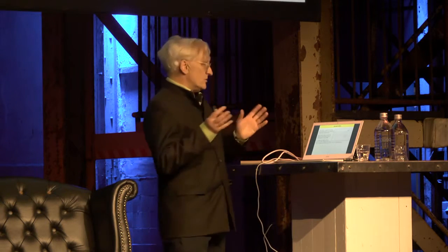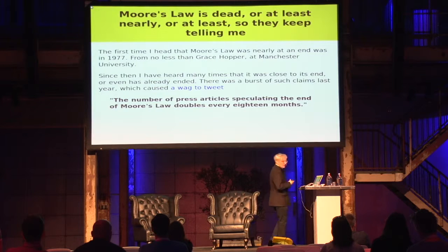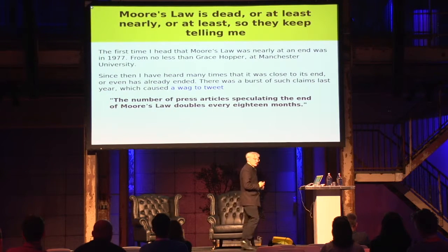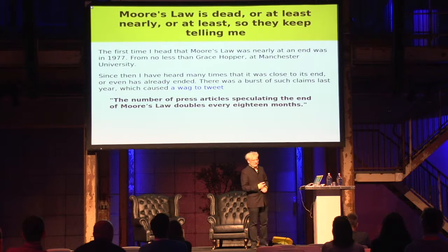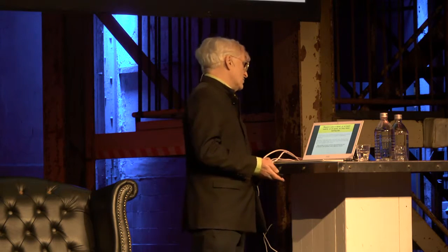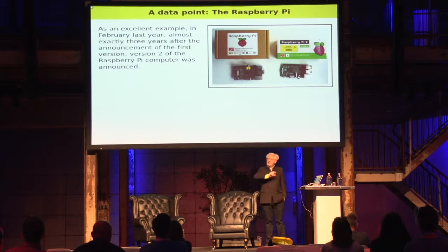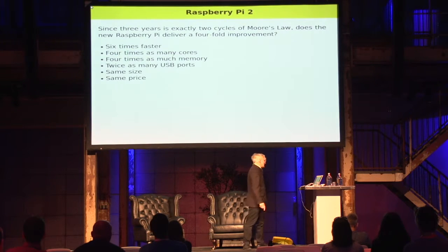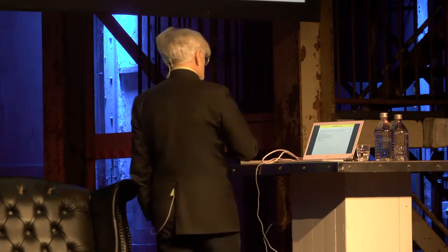In 1988, my laptop had a power of 800 units. This one has a power of more than 25 million — that's 15 doublings in that period. Last year, everybody was saying Moore's Law is nearly over, but I've heard that so often. The first time I heard it was nearly over was in about 1977, from Grace Hopper. And there was a great tweet: 'The number of press articles speculating the end of Moore's Law doubles every 18 months.' Here's a data point: the Raspberry Pi 2 came out exactly three years after the Raspberry Pi 1 — two Moore's Law cycles — and it was pretty much four times as powerful: six times faster, four times as many cores, four times as much memory, twice as many USB ports, same size and same price. So I still don't believe Moore's Law is nearly at an end.